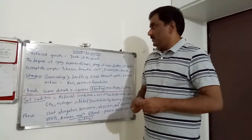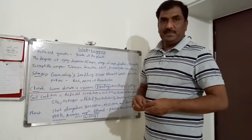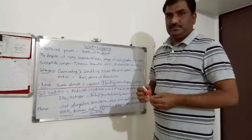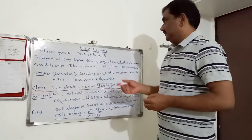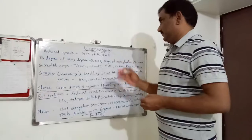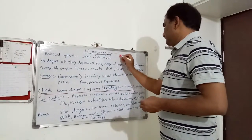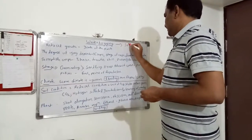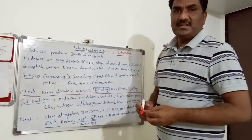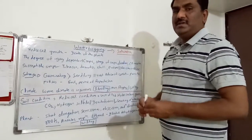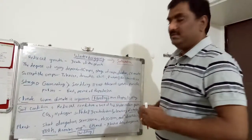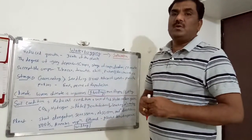Today we will discuss the important topic of waterlogging. Waterlogging refers to the condition when air is completely or partially replaced by water. When air is completely replaced by water, we call it saturation. When this saturation condition prolongs for a longer period, we call it waterlogging. Important points to note: air is replaced by water, and it is a prolonged period.